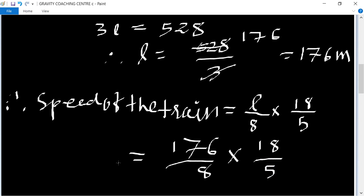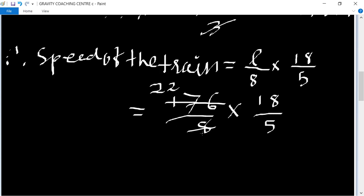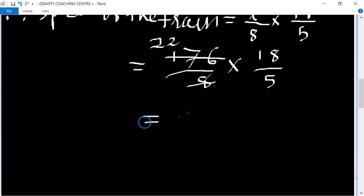So now cancel by table of 8. 176 divided by 8 is 22. 22 into 18 equals 396 upon 5, so after dividing the result is 79.2 km per hour.